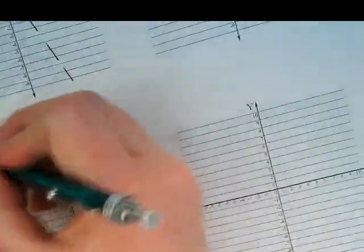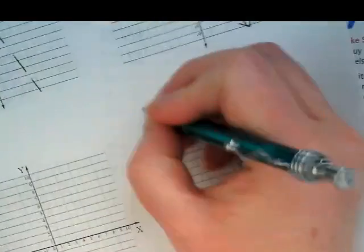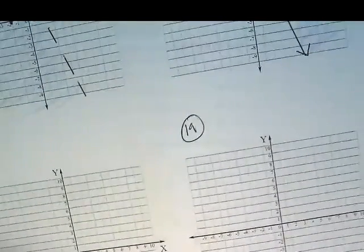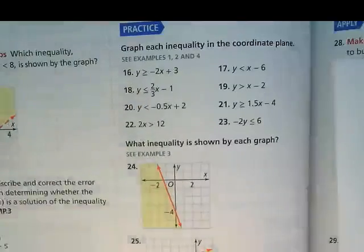Okay. So let's number this. This one here is going to be number 18. 19. When you do them, you're going to write the inequality as your title. On the back of the paper,